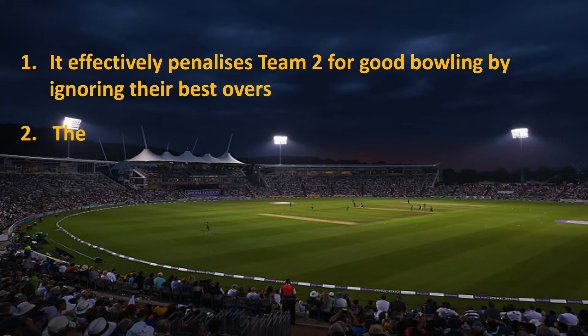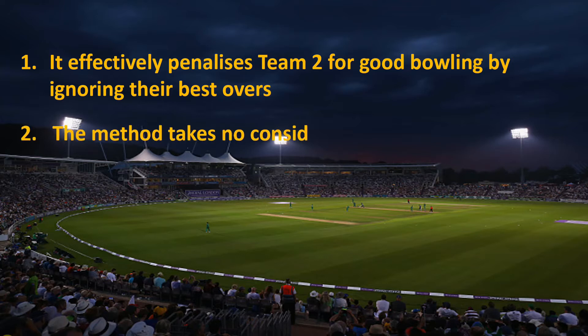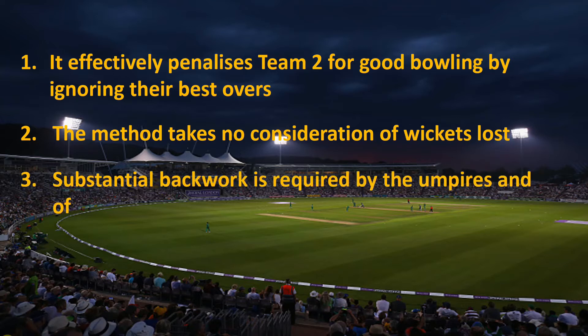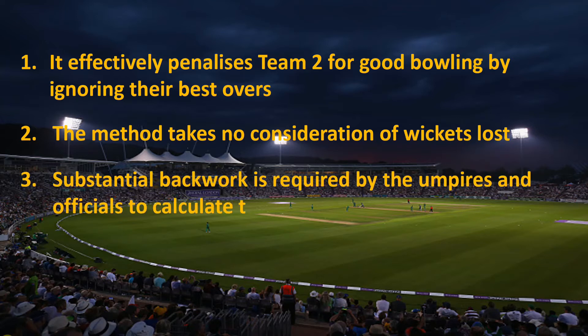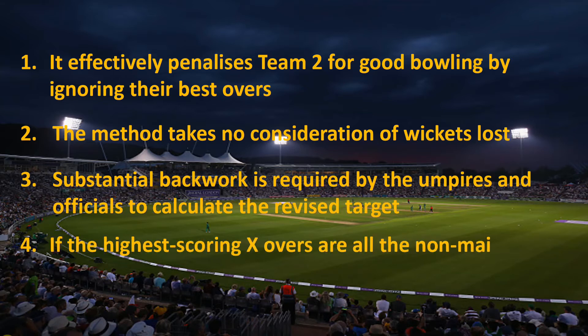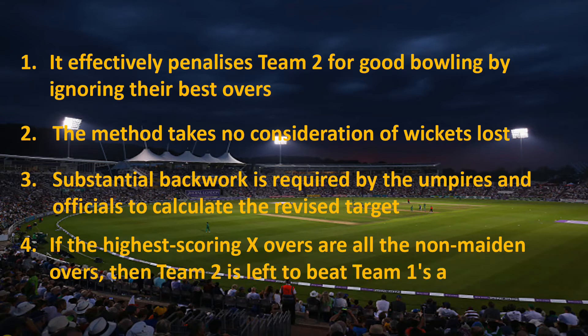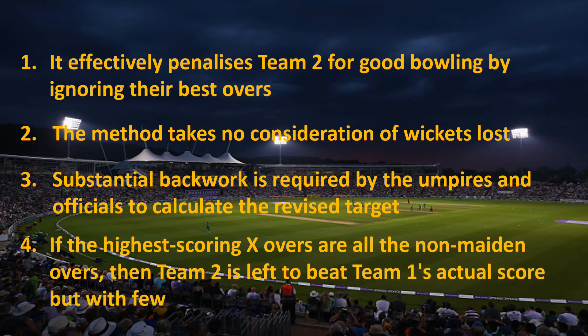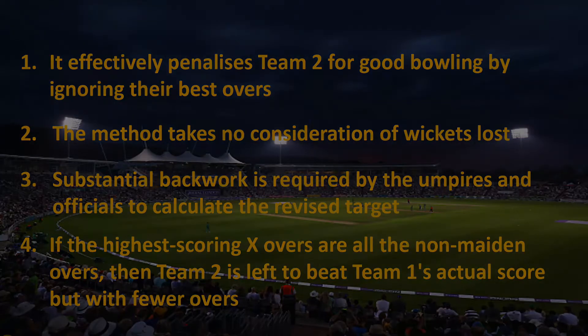Another flaw of the MPO method is that it takes no consideration of wickets lost, just like the ARR method. Substantial back-work is also required by umpires and officials to calculate the revised target. Finally, if the highest-scoring X overs are all non-maiden overs, team 2 is left to beat team 1's actual score with fewer overs, which highly favors team 1. In such cases, a modification reduced the target by 0.5% for each over lost.